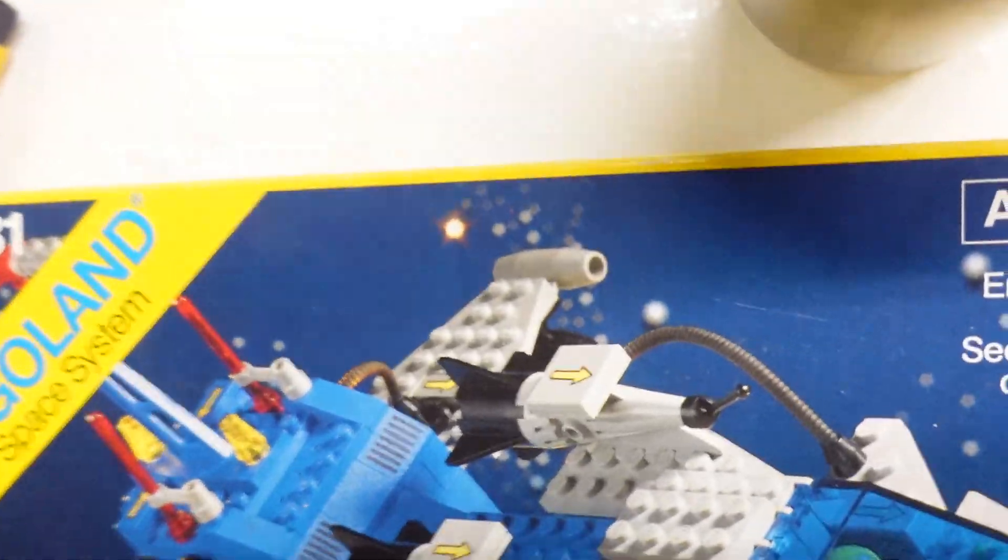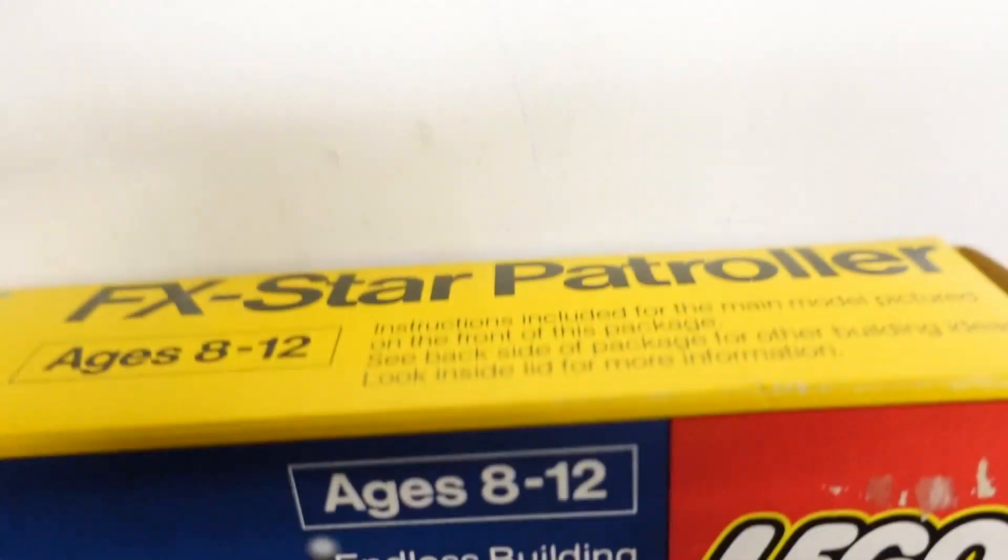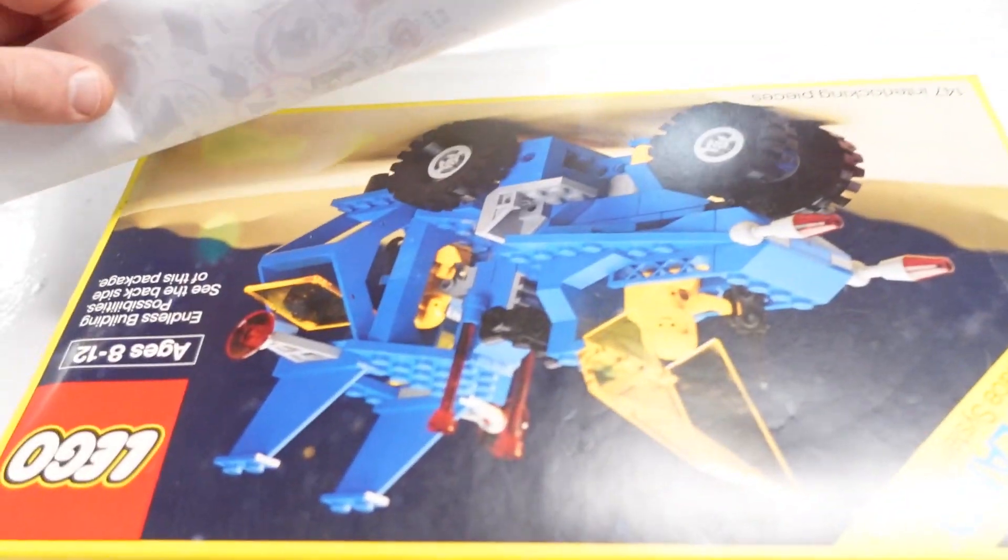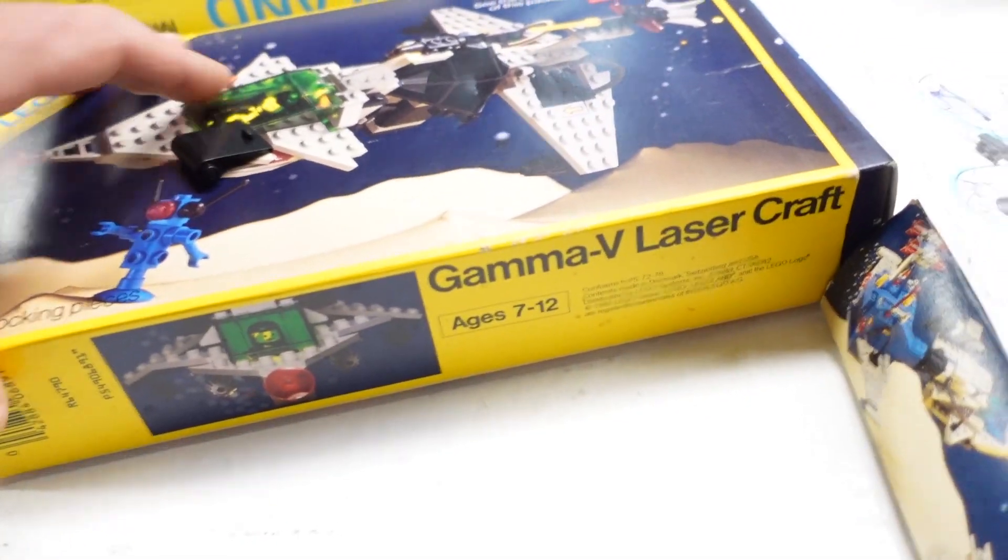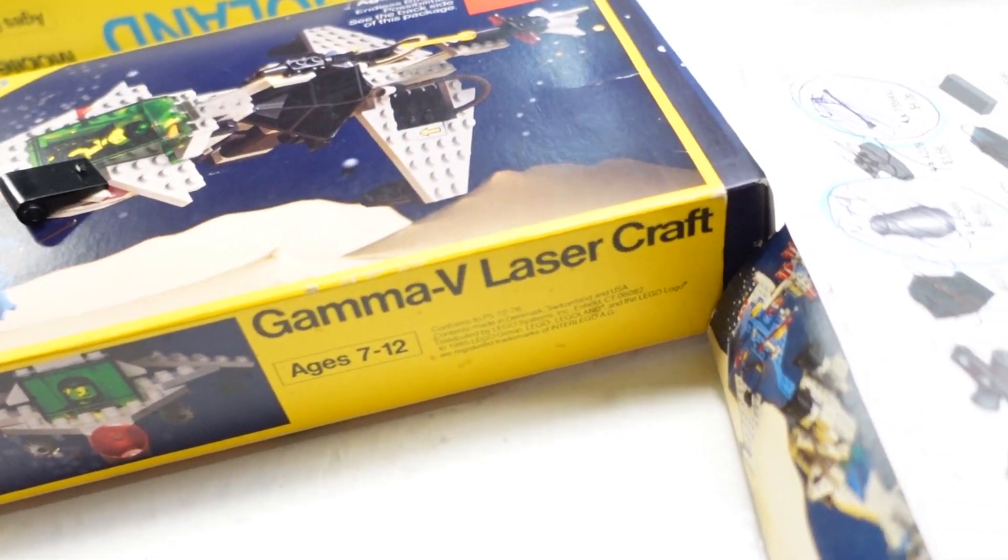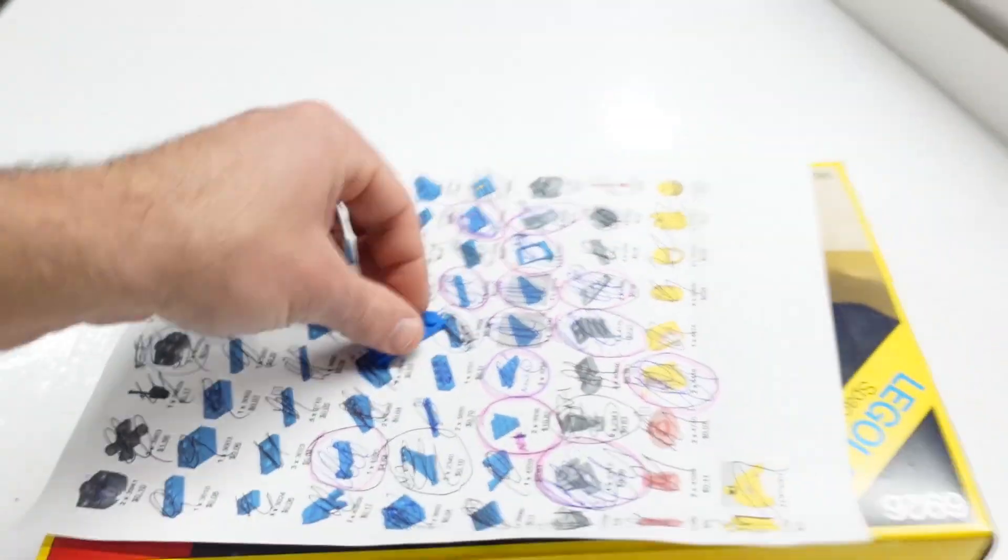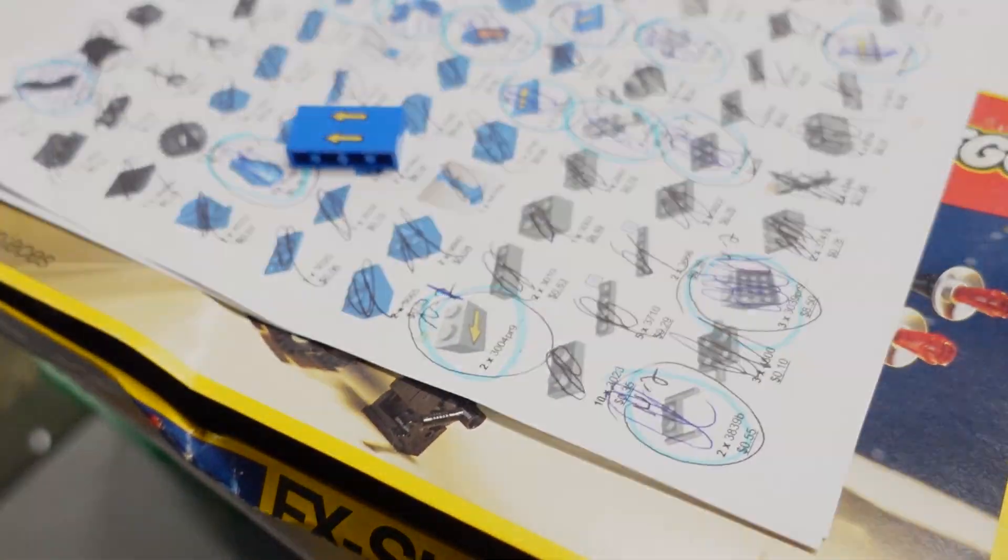This is the FX Star Patroller Mobile Recovery Vehicle. That's a nice big one. This one's called the Gamma V Laser Craft. So that is great. I'm going to go right now and order this from somebody so I know it's on the way.